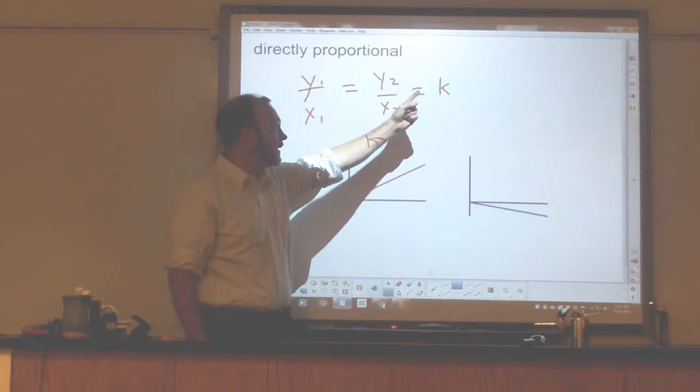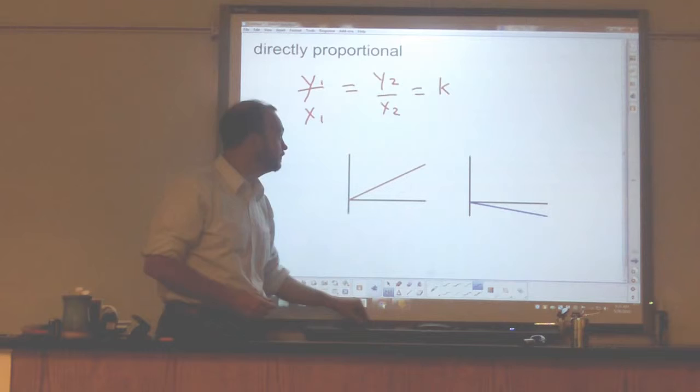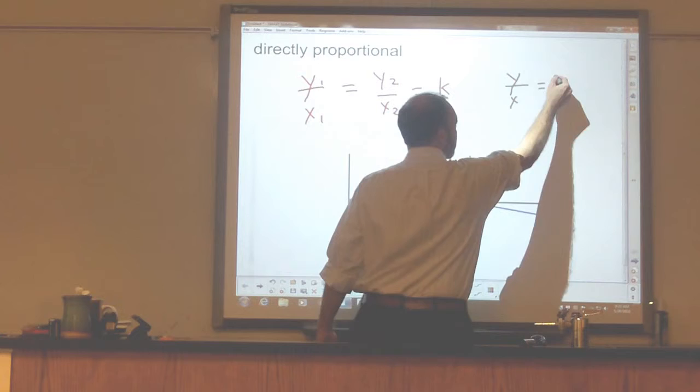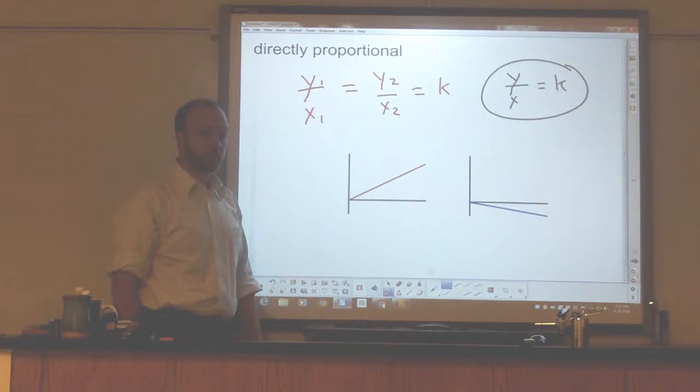Now, we can simplify the way we write that. Instead of writing y1, x1, y2, x2 is k, we can just say that y over x is a constant. In fact, this is often the definition that is given for something being directly proportional.